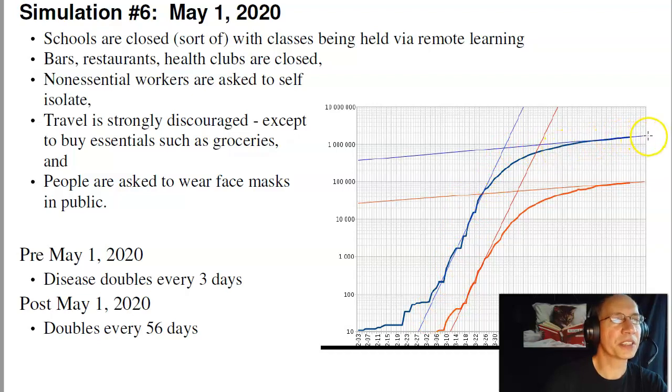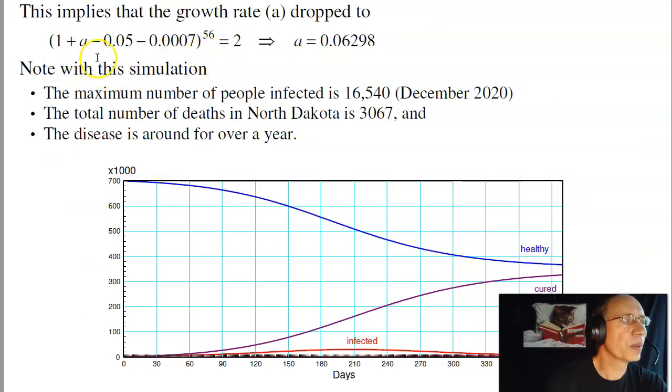But at a lower rate, this right here tells you the new n times p. The new rate is the disease is doubling every 56 days rather than every three days. With that I can calculate what a is. If in 56 days it doubles, then it says a is 0.06. If I re-run the simulation so that n times p is 0.06, I wind up with this.